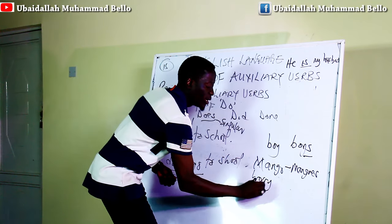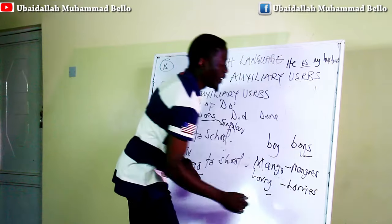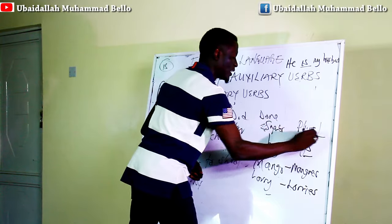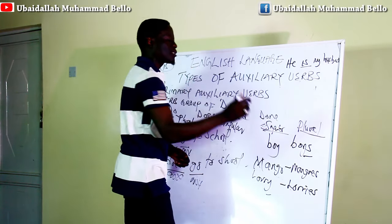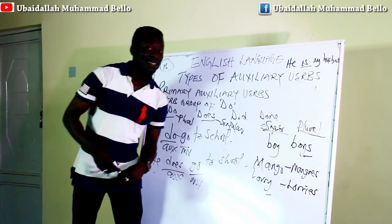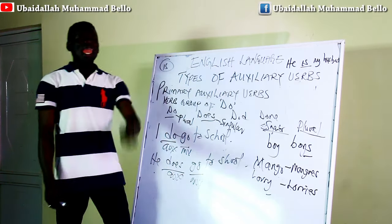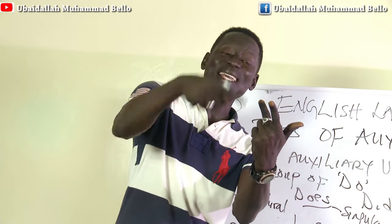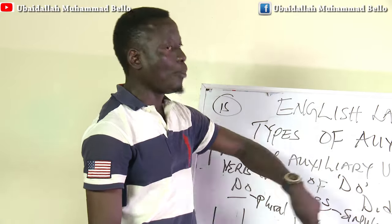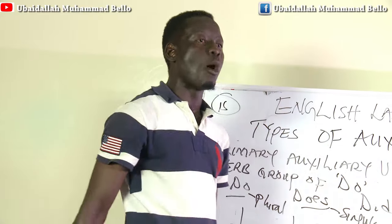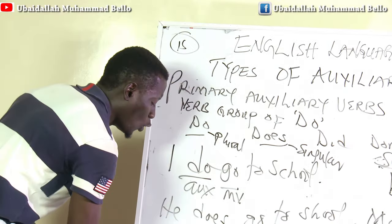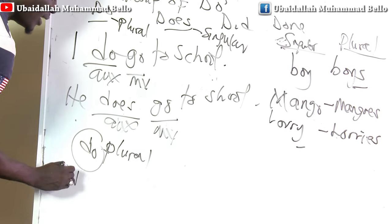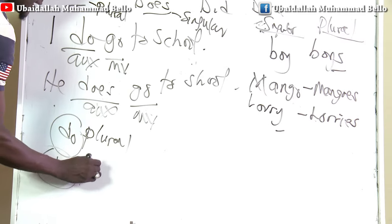For example, 'glory' — the 'y' changes to '-ies' to mean 'glories.' 'Glory' is singular and 'glories' is plural. But this is only the case for nouns. The reverse is the case for verbs. Any verb that takes '-es,' '-oes,' or '-ies' — it is not a plural form of a verb but a singular form. For instance, 'do' is not singular but plural, and the singular form is 'does.' This is the singular form.